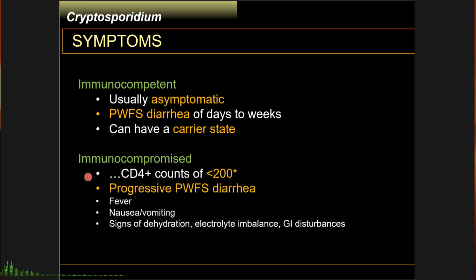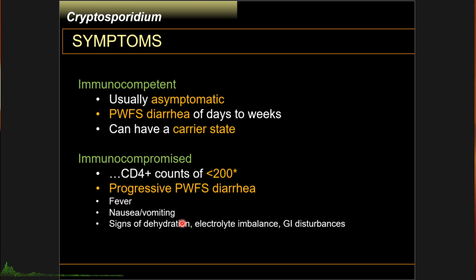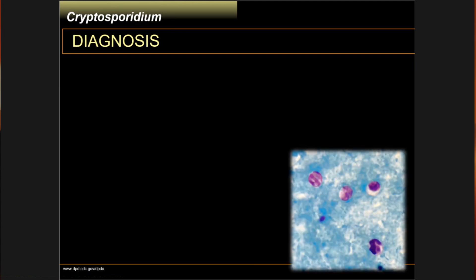In immunocompromised patients — usually those with CD4 counts dipping below 200 — they manifest with the same type of diarrhea but progressive in symptomatology and severity. Other symptoms also develop such as fever, nausea and vomiting, and other non-specific gastrointestinal symptoms, including signs of dehydration, electrolyte imbalance, and GI disturbances. In fact, cryptosporidiosis is the most common gastrointestinal infection causing diarrhea in HIV/AIDS patients.